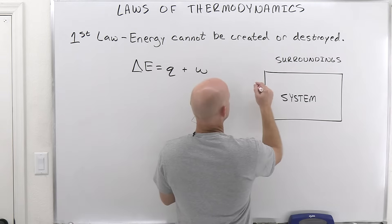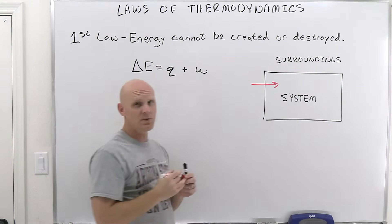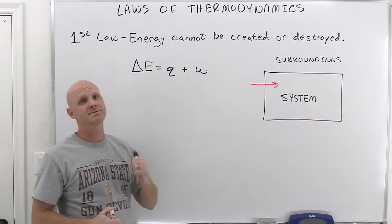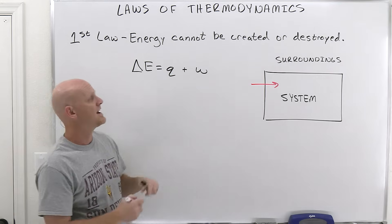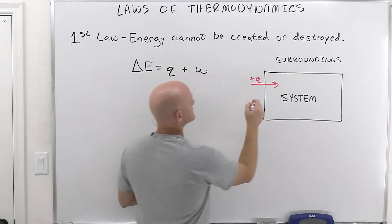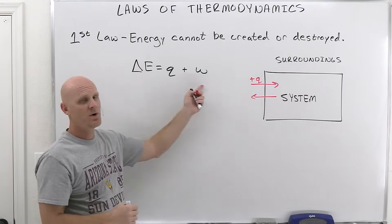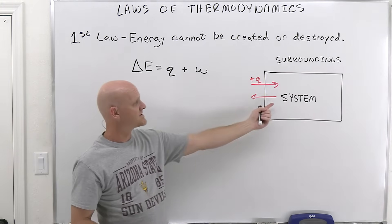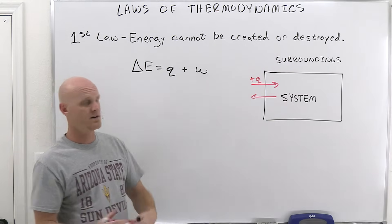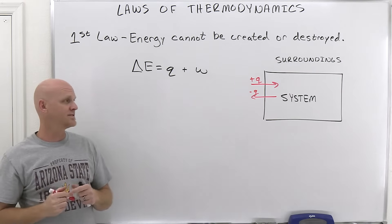Energy can be transferred in two different forms. One of those is Q, and Q is heat transfer. If heat is transferred into the system, the system gains that heat, and Q is positive. On the other hand, if heat is transferred out of the system to the surroundings — we always look at this equation from the perspective of the system — the system is losing the heat and losing energy, so Q would be a negative number.